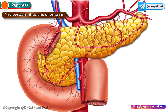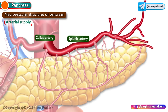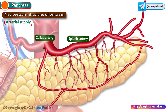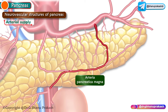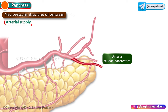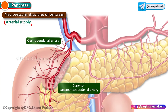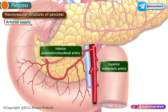The pancreas is a highly vascular structure. The splenic artery, a branch of the celiac artery, is the main source of blood supply to the body and tail; as many as 10 branches may pass to these regions. One large branch is the arteria pancreatica magna, arising near the tail and running towards the neck, and a smaller branch, the arteria cauda pancreatica, runs towards the tip of the tail. Additional supply comes from the superior pancreaticoduodenal artery, a branch of the gastroduodenal artery, and the inferior pancreaticoduodenal artery, a branch of the superior mesenteric artery.